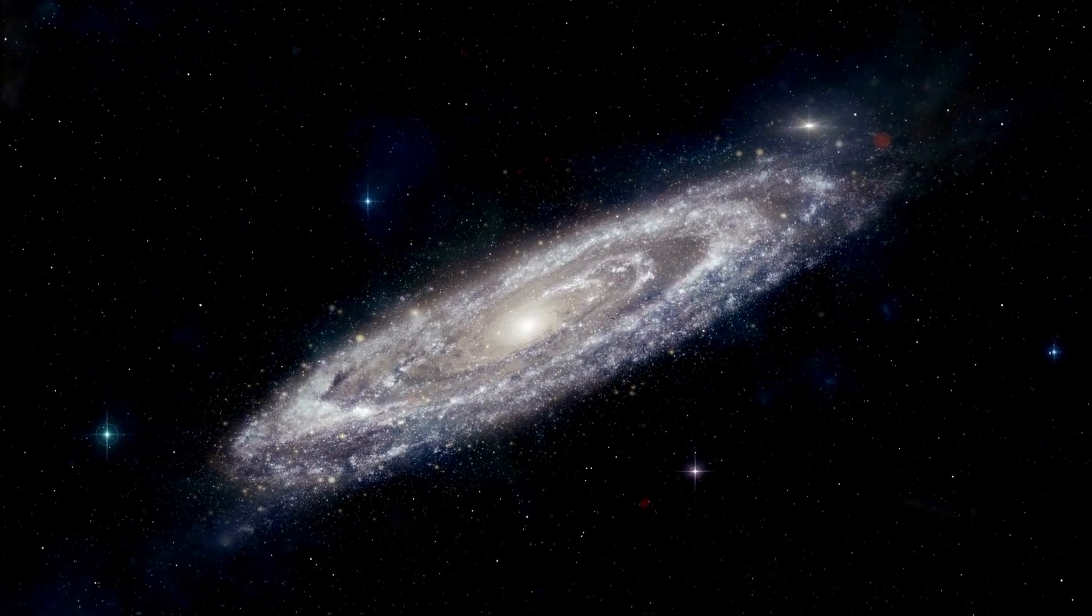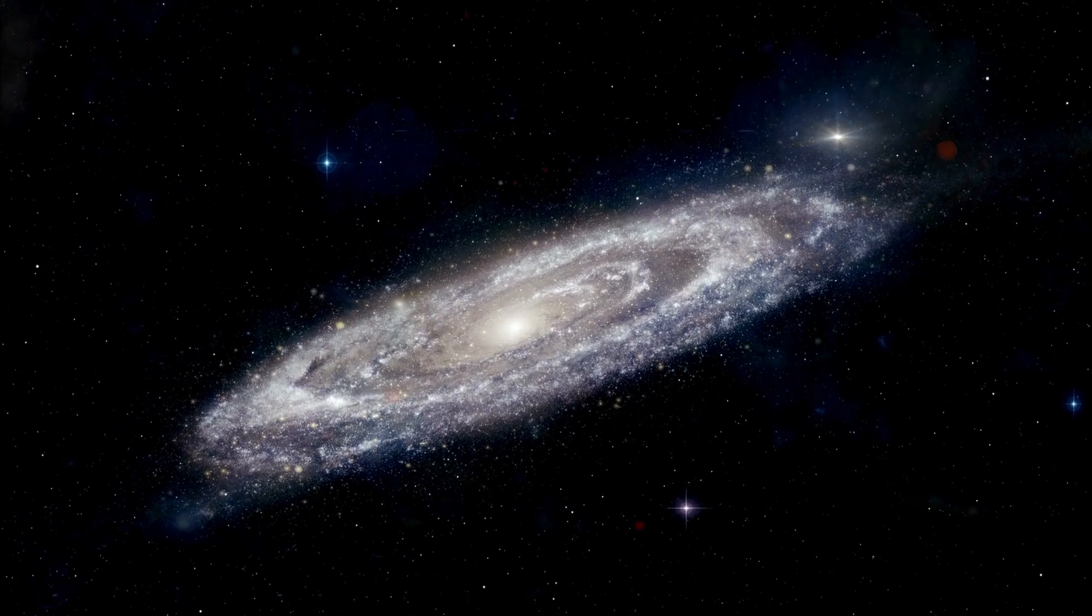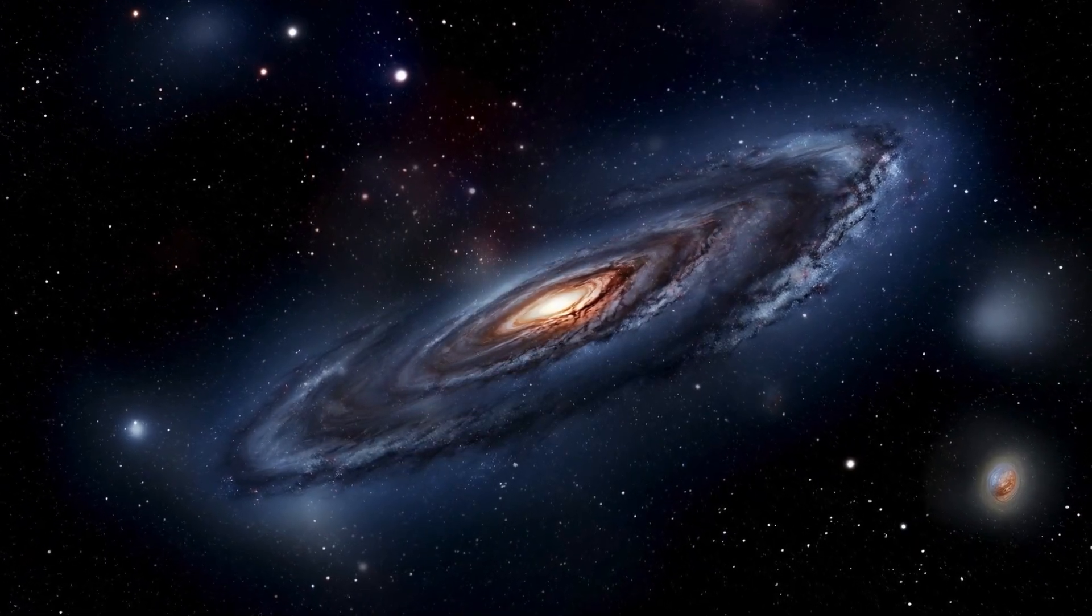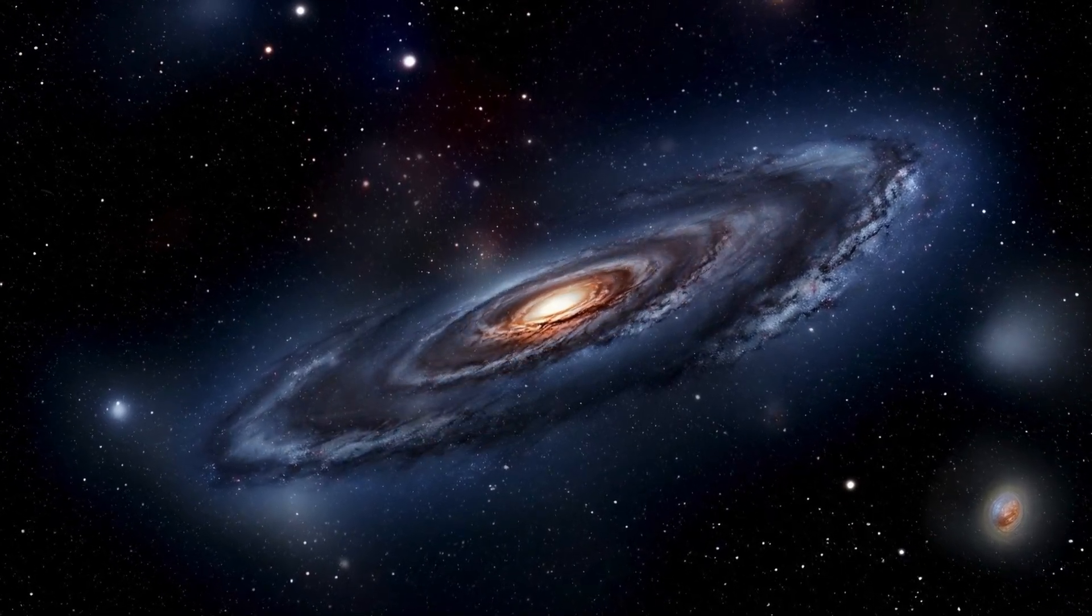The stars would need to be about 500 times brighter. This scenario is impossible since Proxima b orbits so closely to its host star. There is a chance that it might be tidally locked, meaning one side of the planet always faces the star while the other is in perpetual night.